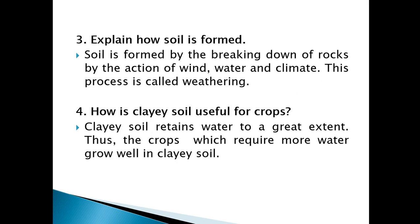Moving to the next subjective question — explain how soil is formed. We just discussed this in the weathering process. The huge parent rock or bedrock breaks down by the weathering process. The agents are wind, water, and natural calamity or climate. Due to that, the bedrock breaks down into smaller and smaller pieces and finally converts into powdered form. This soil formation process is known as the weathering process.